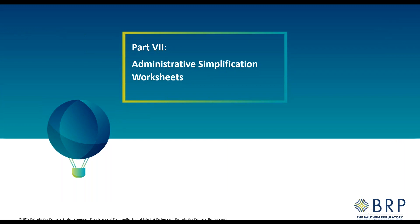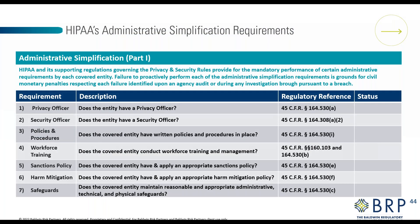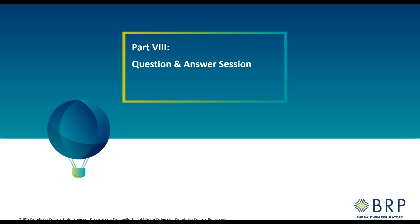We have some administrative simplification worksheets to guide you through conducting those activities — we're not going through them in detail now, but they're included for your use. The worksheet has the requirement on the left, a description of what you need to do, a citation from the Code of Federal Regulations you can research for more information, and a status box. There are 13 requirements with subparts. I'll pass it back to Marie for the Q&A session.